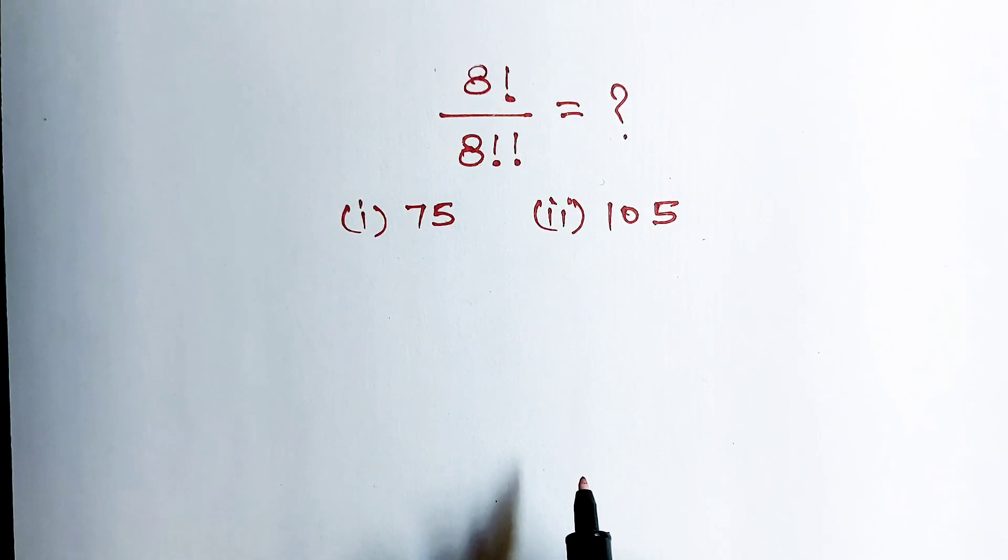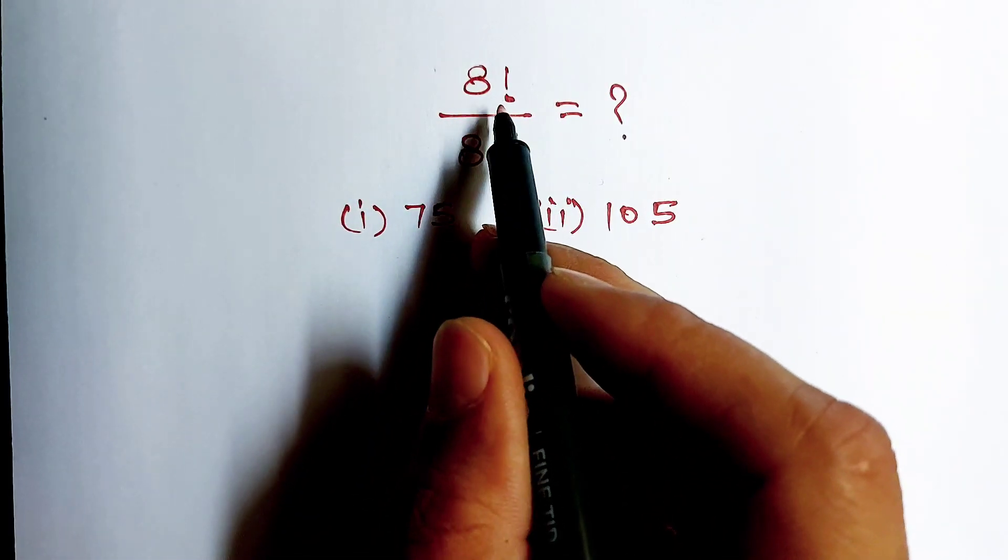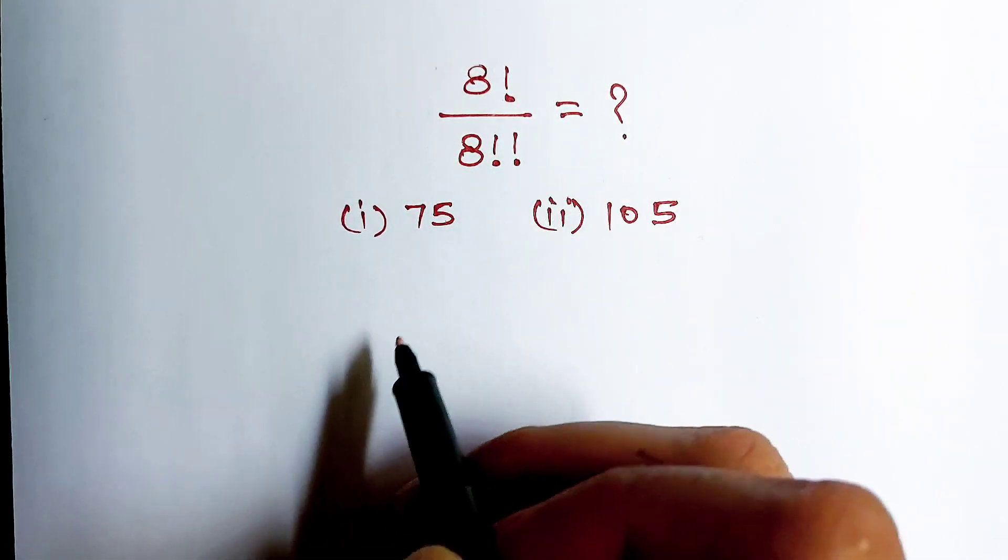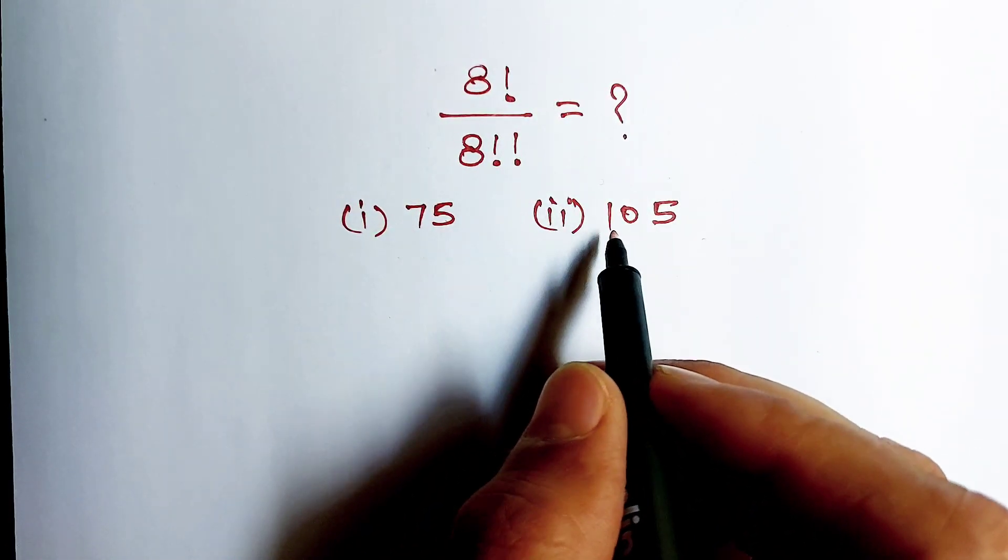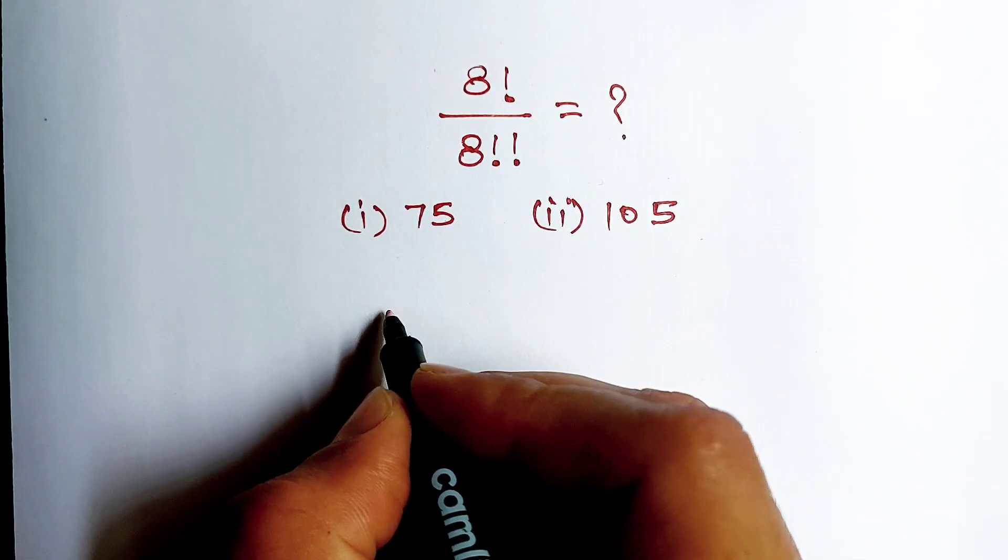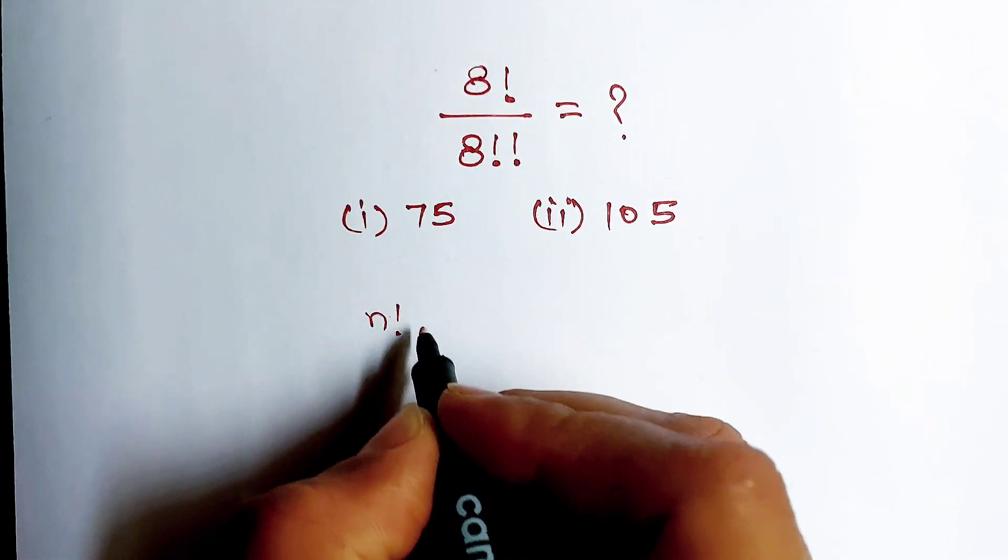Hello dosto, here is the question: is factorial of 8 divided by double factorial of 8 equal to what? Is it 75 or is it 105? Let's find out. First of all, we should know that n factorial is equal to...